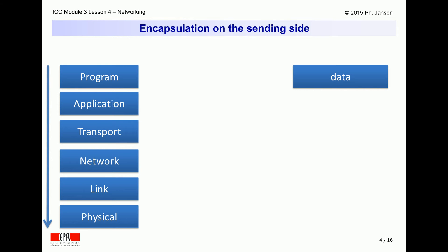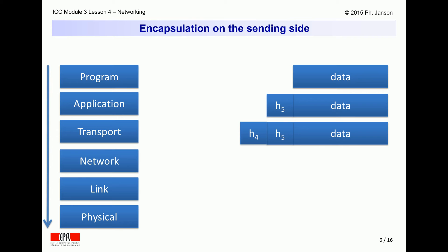Thus, when a program wants to send data to a peer program on another computer on the other side of the network, it passes that data to the proper application protocol layer, which prefixes the data with the corresponding application layer protocol header, H5, in this example. The application protocol layer in turn passes the resulting message to the transport protocol, which prefixes it with its own network protocol header, H4, in this example.